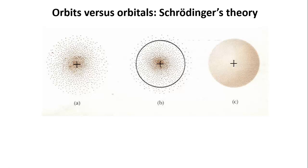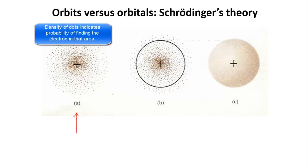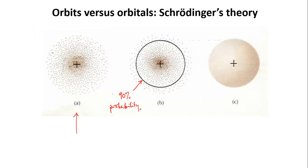Orbitals are usually represented in one of two ways. On the left here is a diagram like that on the previous slide. The density of the dots tells you about how likely it is that you will find the electron in that region for this orbital. The black circle on the middle diagram indicates the region within which there's a 90% probability that you will find the electron at any point in time.